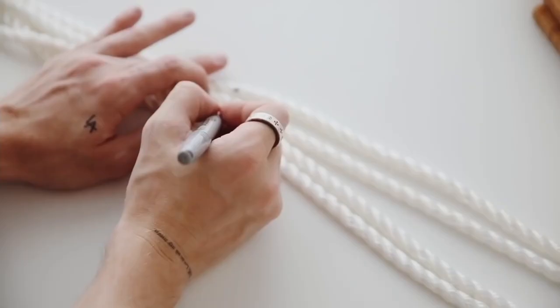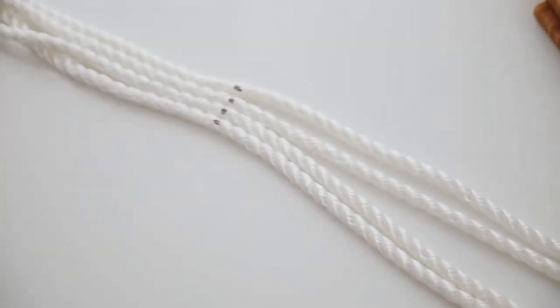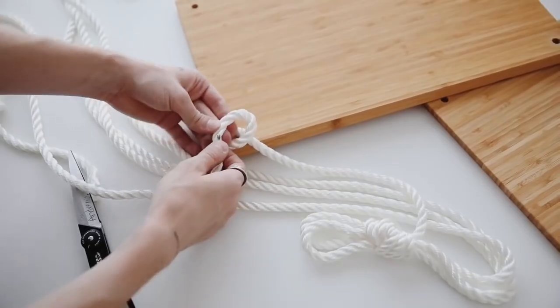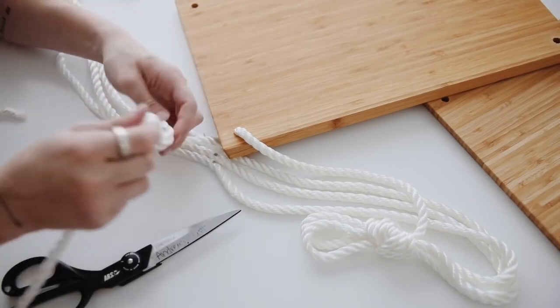Next, what I did was measure down about 18 inches from our knot and just made a little marking on our piece, because that is exactly where we're going to be tying our knots on each section.